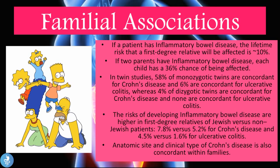The familial associations: if a patient has inflammatory bowel disease, the lifetime risk that a first-degree relative will be affected is 10%. If two parents have IBD, each child has a 36% chance of being affected. In twin studies, 58% of monozygotic twins are concordant for Crohn's disease and 6% are concordant for ulcerative colitis.